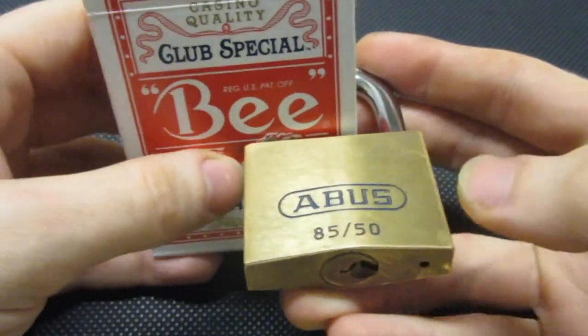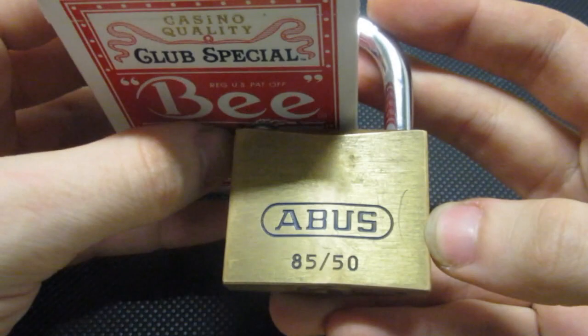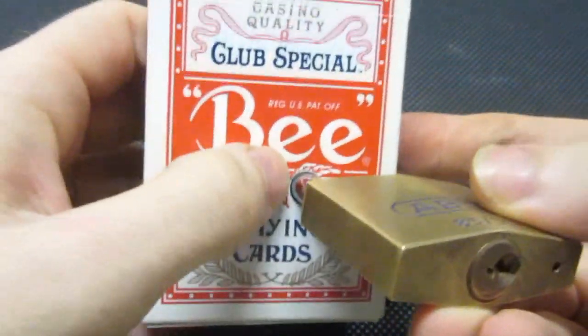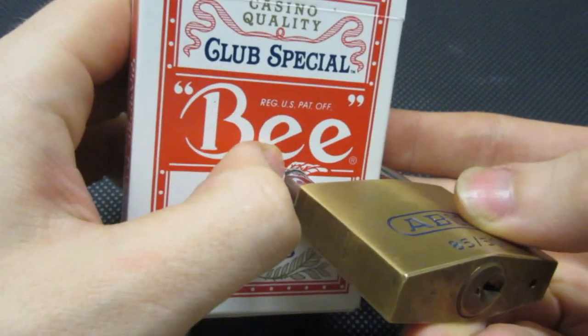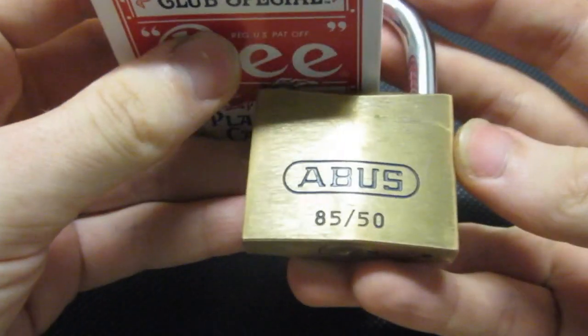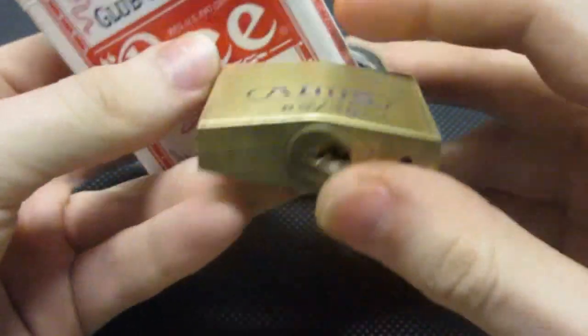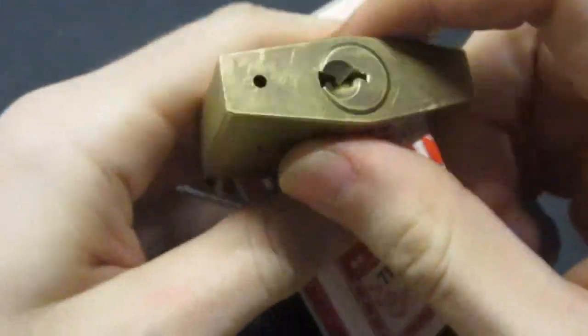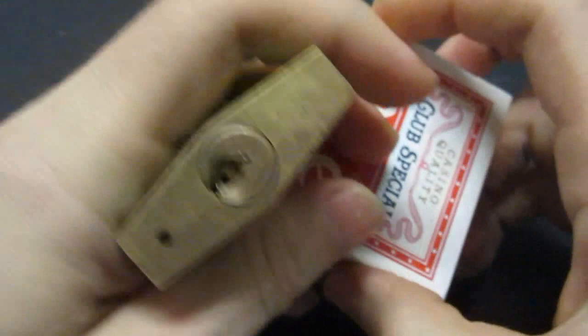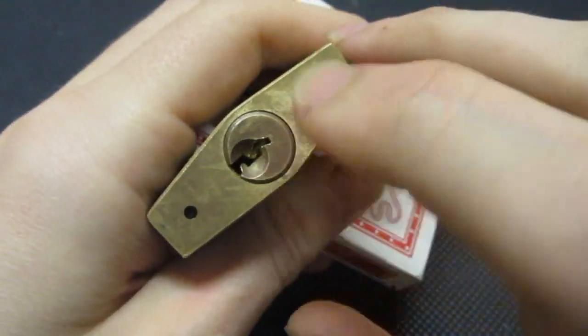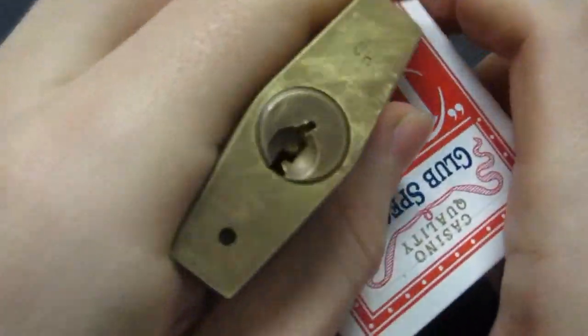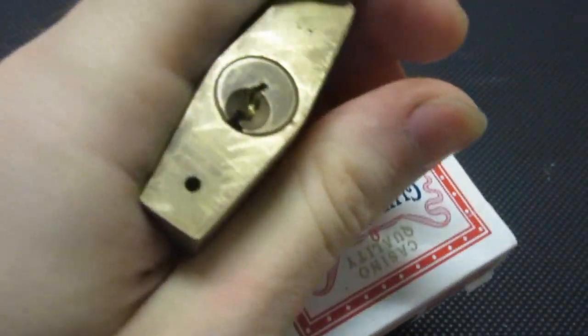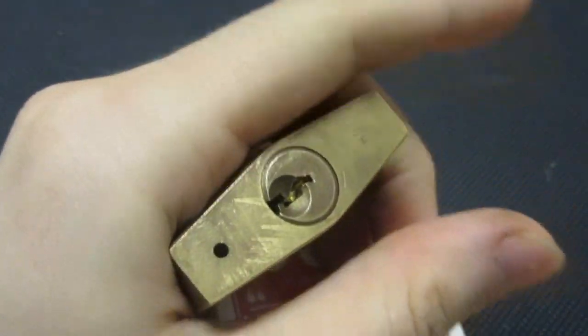So what I have here is a deck of cards with a hole punched in them and an Abus 8550, which is a nice beefy solid German-made lock. But how tough is it when it comes to picking attacks? Well, let's find out.